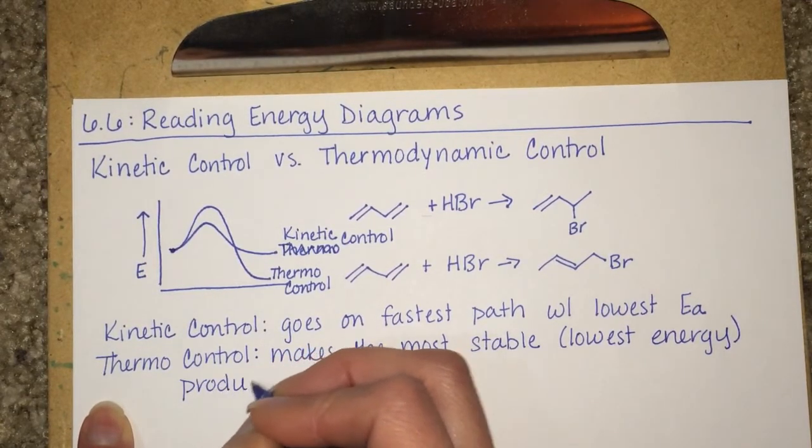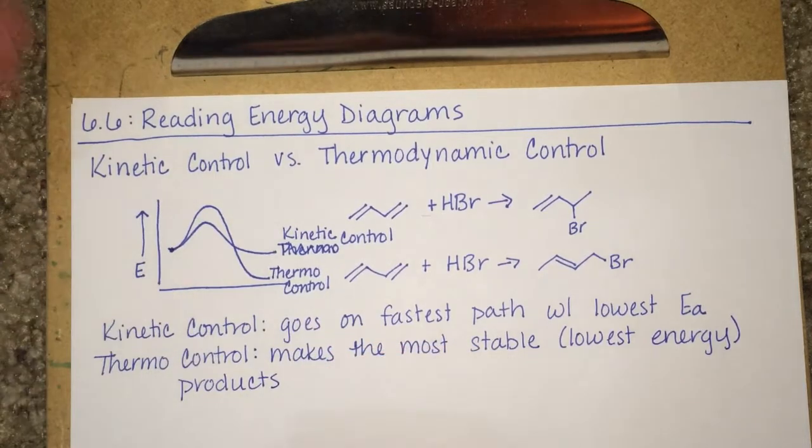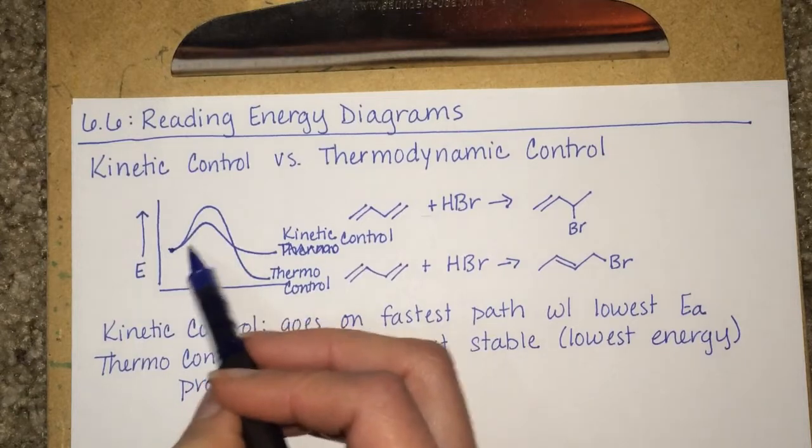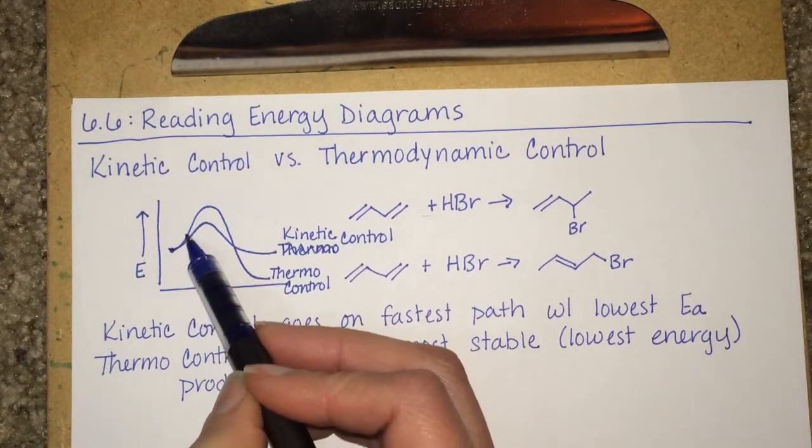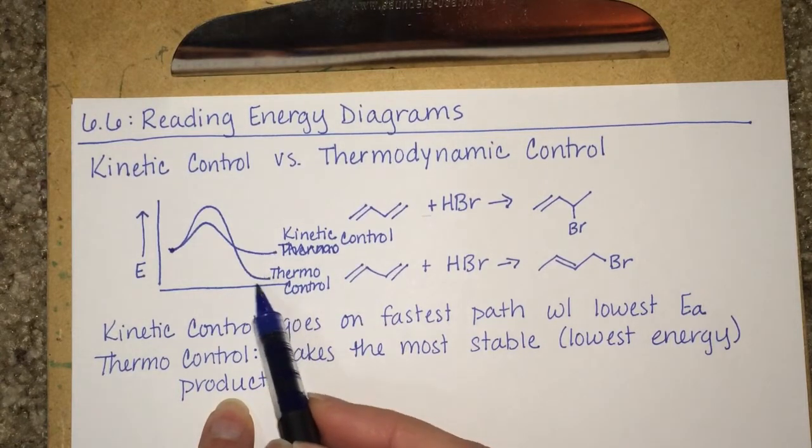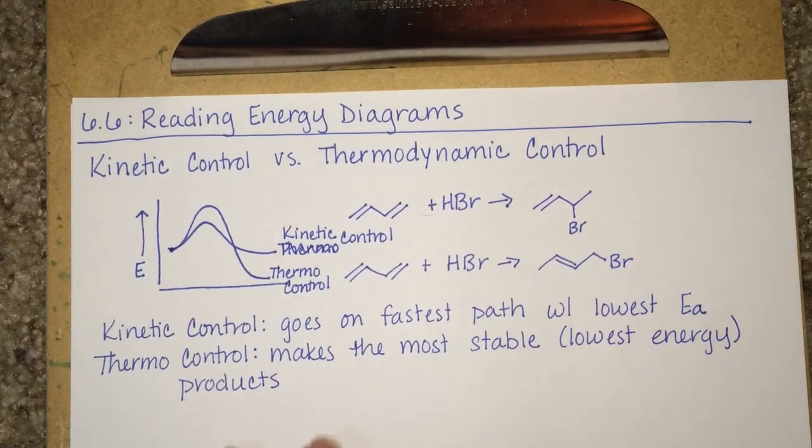So because thermodynamics is all about energy, the reaction pathway that's under thermocontrol is the one that maybe requires more activation energy to get started. But in the end, it's going to produce the most thermodynamically stable product.